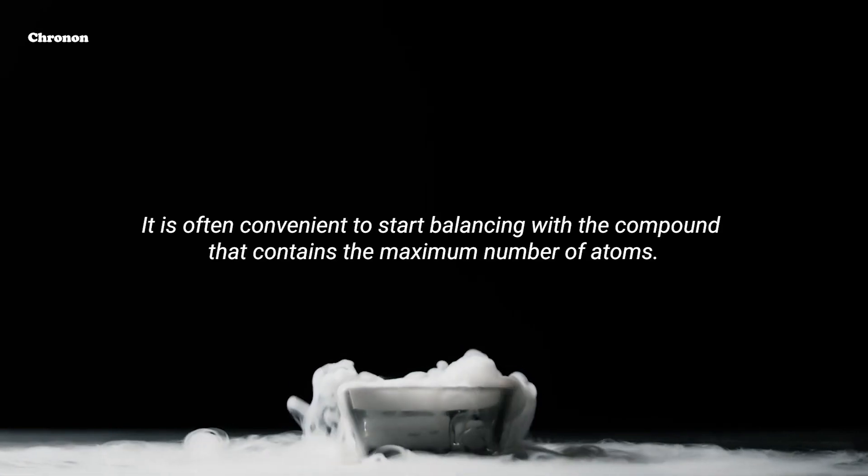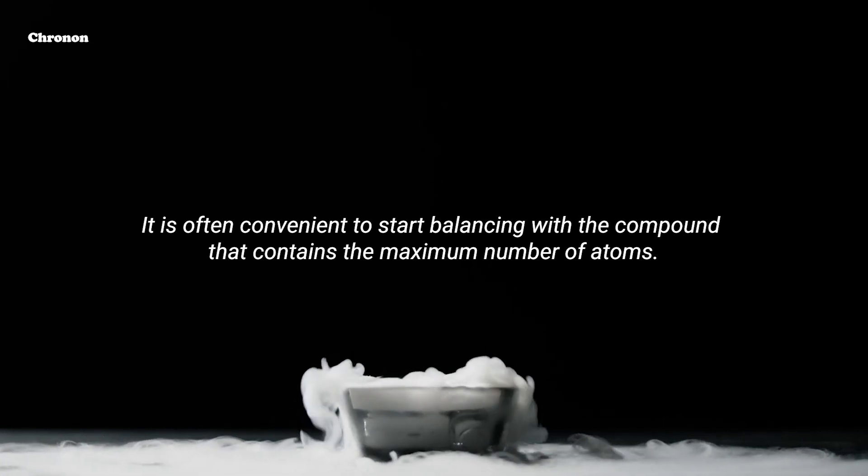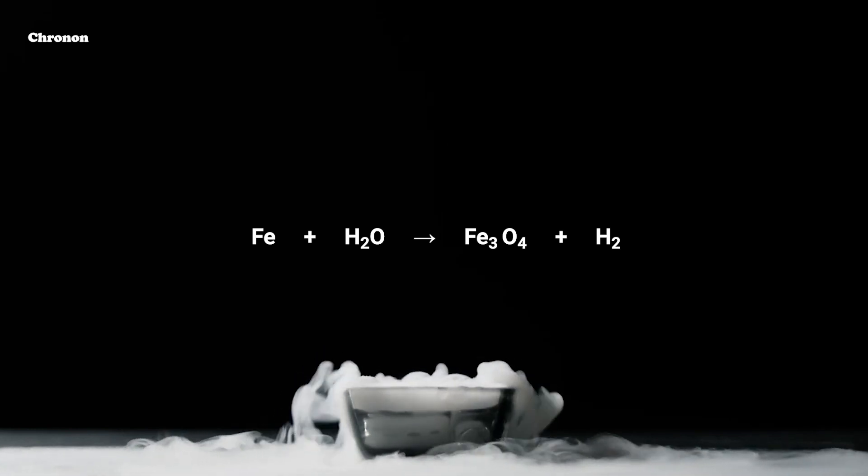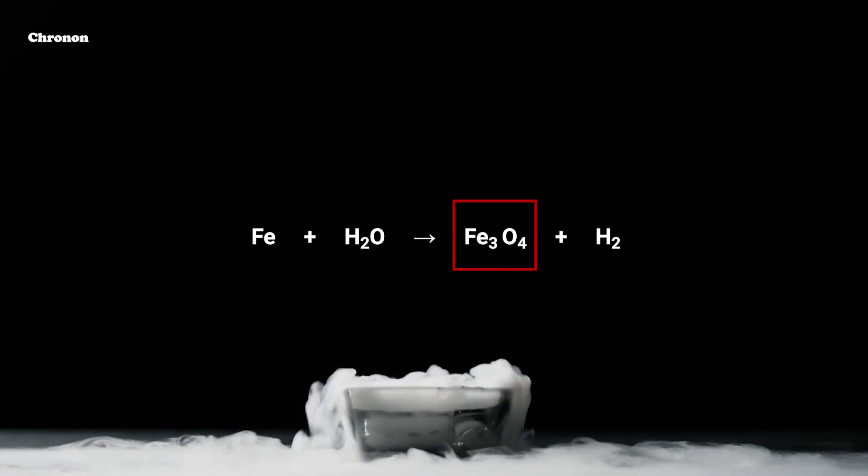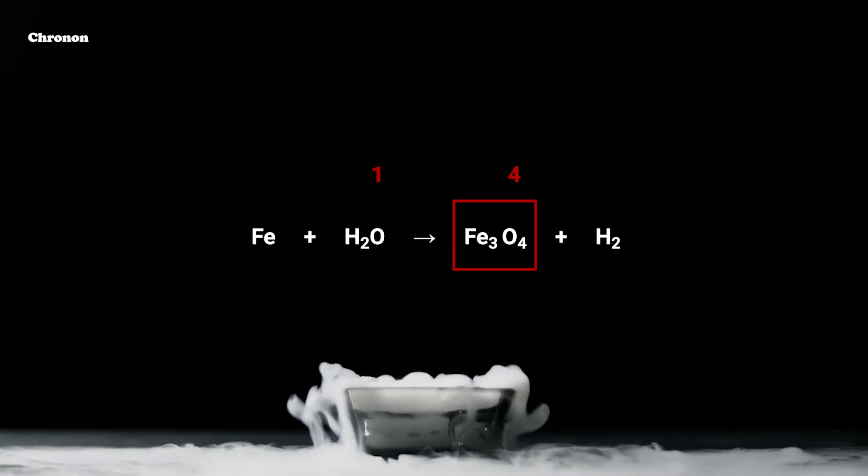Step 3: It is often convenient to start balancing with the compound that contains the maximum number of atoms. It may be a reactant or a product. In this compound, let's select the element which has the maximum number of atoms. Using this criteria, we can select Fe3O4 and the element oxygen in it. There are four oxygen atoms on the right hand side and only one on the left hand side.